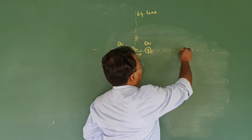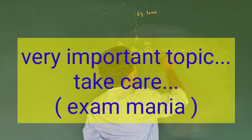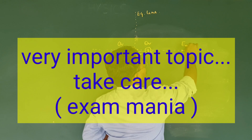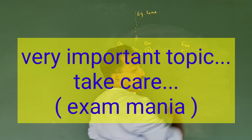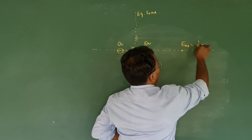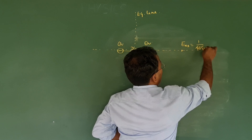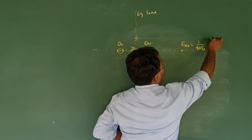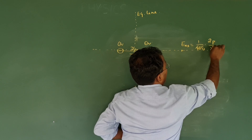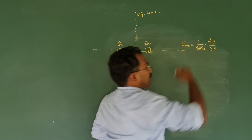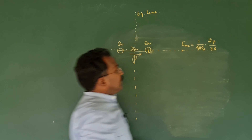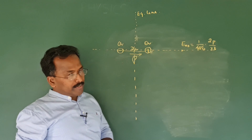I am writing here that the electric field E_x is equal to 1 by 4 pi epsilon 0 into 2P divided by R cube. I am just keeping that equation there.